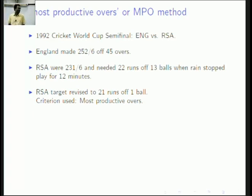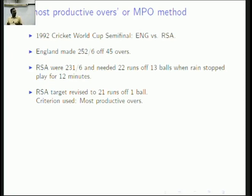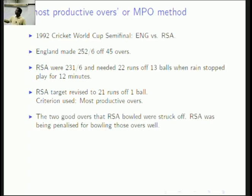The criterion used was called the Most Productive Overs method — the team that batted first was allowed to keep its most productive overs. If two overs were removed, the two least productive overs were removed from team one's score. But South Africa had actually bowled really well, producing two maiden overs, and they were being penalized for having done well. The two good overs that RSA bowled were struck off.